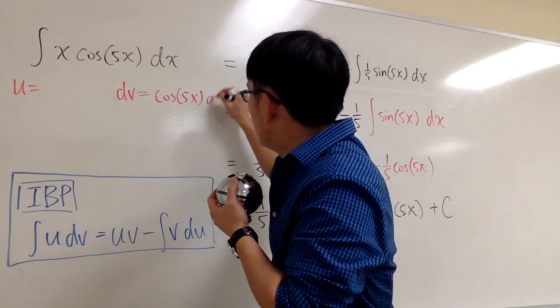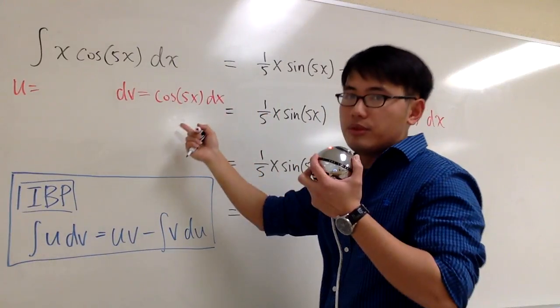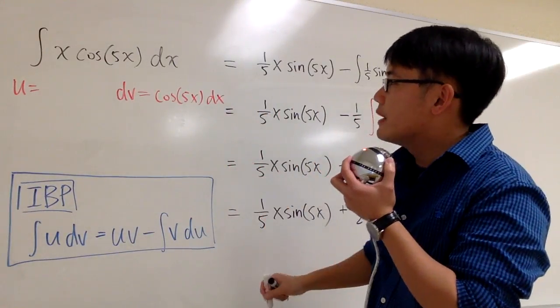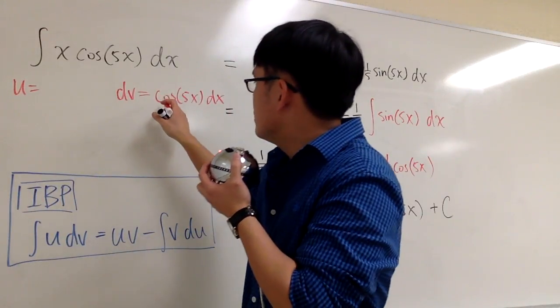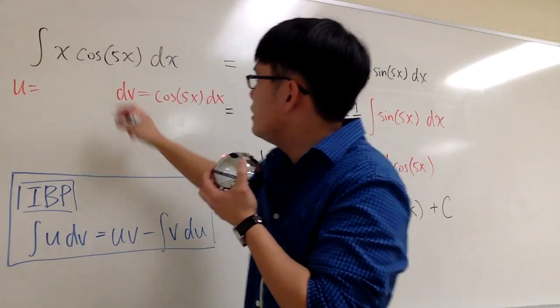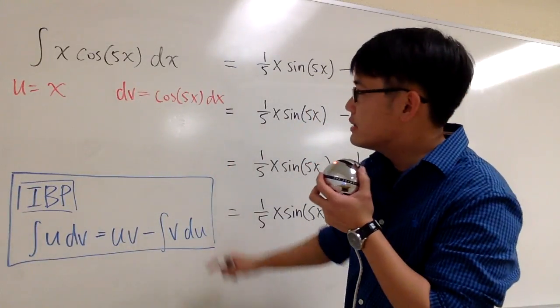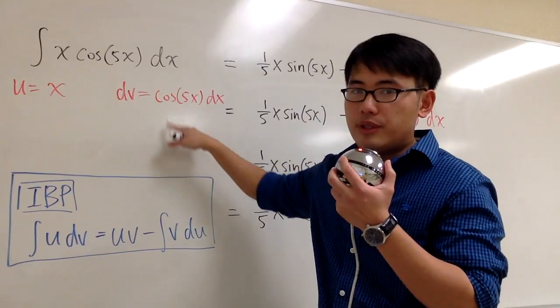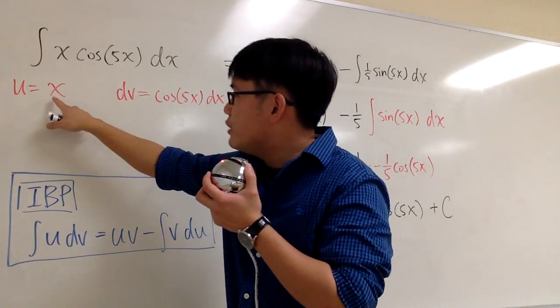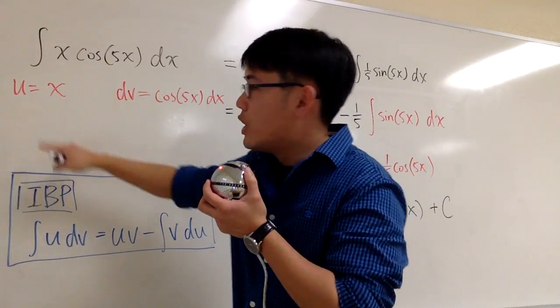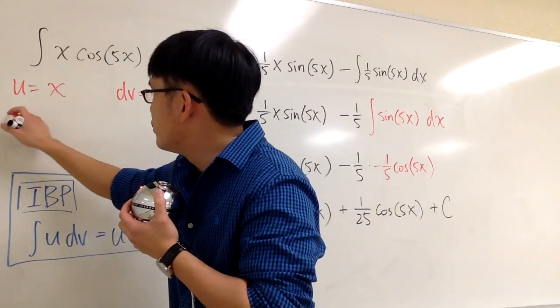And technically, I also have to attach dx, because we have to talk about differentials. And because I chose cosine of 5x to be dv, I'm going to choose x for the u. And the reason why is because this is pretty easy to integrate. But then, the advantage is, having x right here...